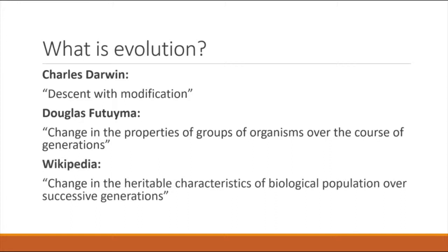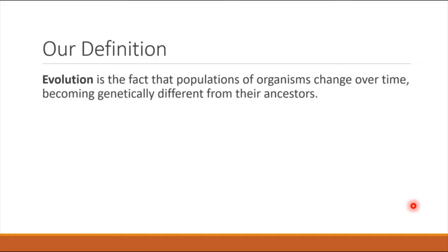Wikipedia defines evolution as change in the heritable characteristics of biological populations over successive generations. The definition we'll use in this class is that evolution is the fact that populations of organisms change over time, becoming genetically different from their ancestors. Given enough time, that genetic change can be reflected in what we would consider evolution of the population.